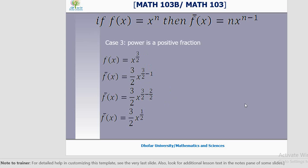The power can be a fraction: x power 3 by 2. How much is n? It is 3 by 2. Now 3 by 2 minus 1 equals 3 by 2 minus 2 by 2, which is 1 by 2. The power 3 by 2 comes down, so 3 by 2 into x power one-half is your derivative. We are using only one rule in this chapter.